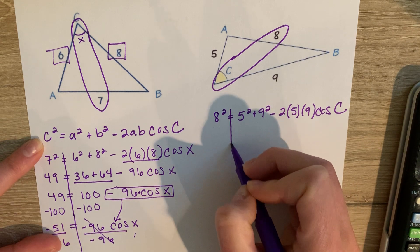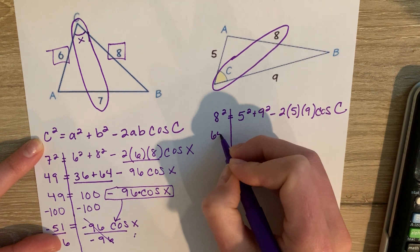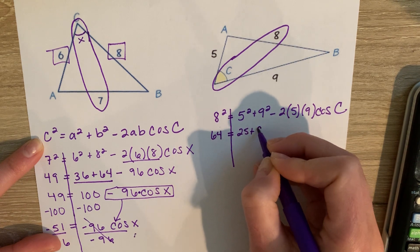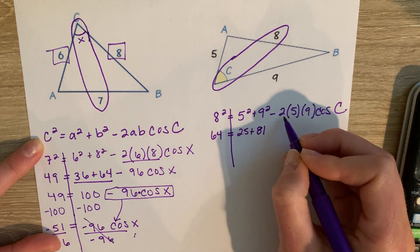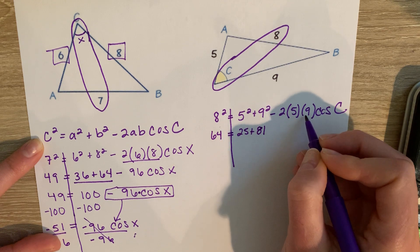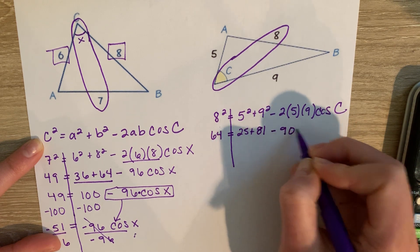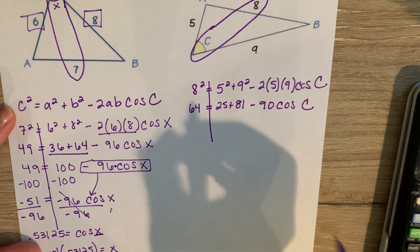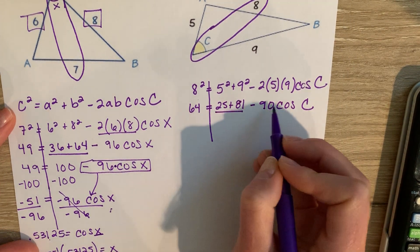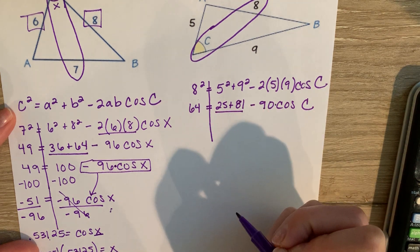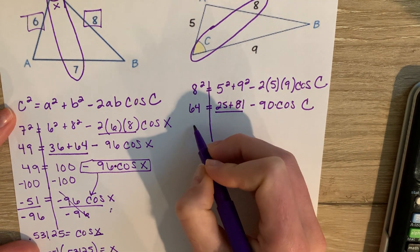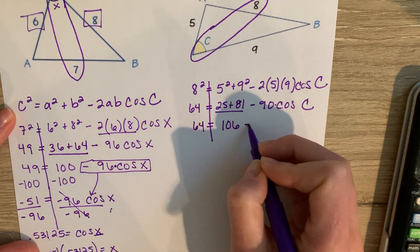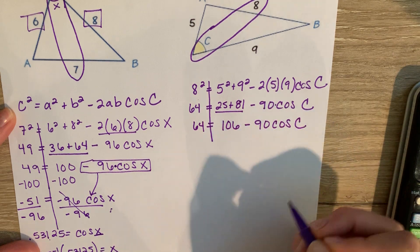A couple things. I know 8 squared is 64. I know 5 squared is 25. 9 squared is 81. 2 times 5 is 10 times 9, we get 90 times cosine of C. Now again, I can combine these, but I can't combine it with the 90 because it's attached to the variable. So I get 64 equals 106 minus 90 cosine of C.